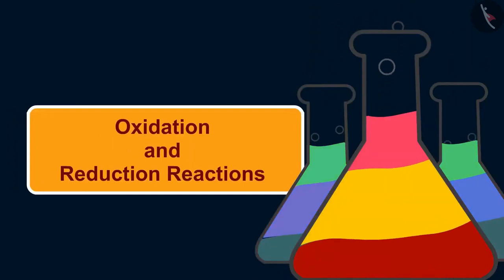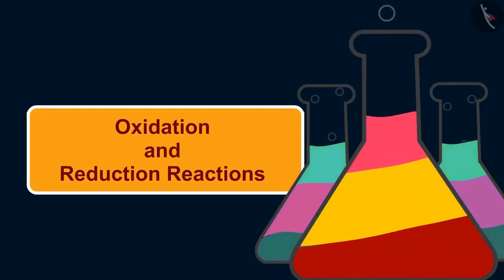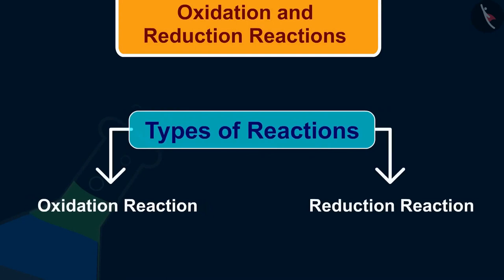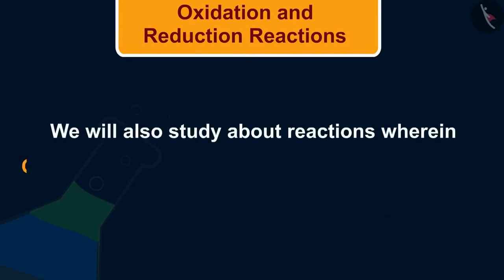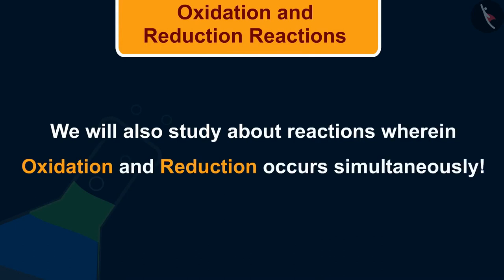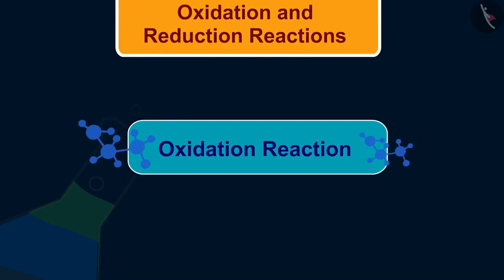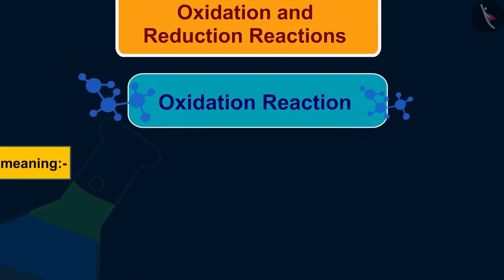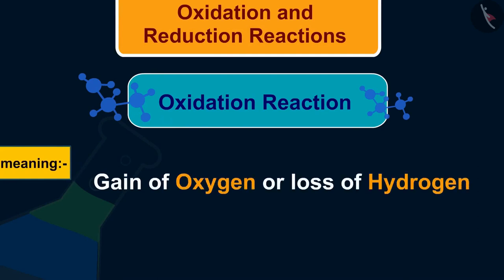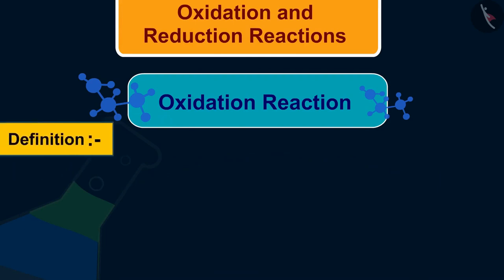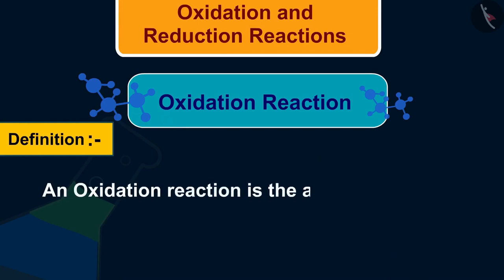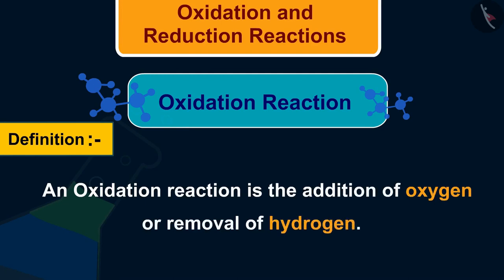Hello friends, welcome to this video session. The topic that we are going to cover in this session is oxidation and reduction reactions. As you know there are a number of types of reactions. Oxidation and reduction reactions are the types we are about to study. We will also study reactions wherein oxidation and reduction occur simultaneously. Let us begin with oxidation reaction. The word oxidation tells us that it means gain of oxygen or loss of hydrogen. An oxidation reaction is the addition of oxygen or removal of hydrogen.